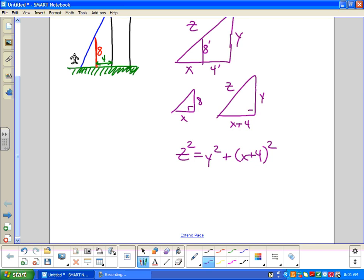Unfortunately, we have two similar triangles. Angle, angle, means angle, angle, angle. So, does everybody agree that 8 over x and y over x plus 4 have to be the same ratios?